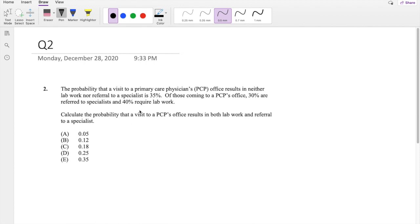Okay, so let's just dive right in. So this question is saying, if you go to the PCP office, it results in neither lab work nor specialist. This is an S by the way. It's 0.35, and 30% are referred to a specialist and 40% are referred to the lab work. So let's just draw a picture.